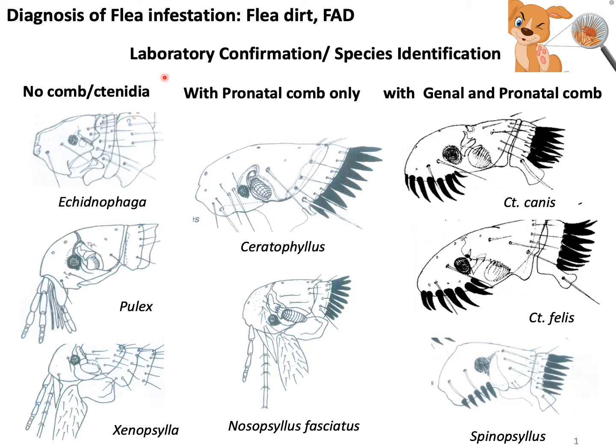For laboratory confirmation or species identification, you have to collect the flea. After processing of the flea, if you observe them under the microscope, based on some characteristics you can easily identify at least the genus level or species level of different fleas.